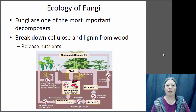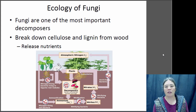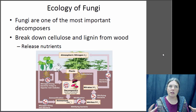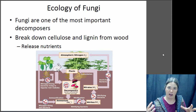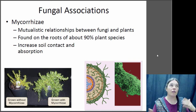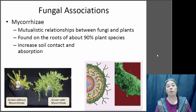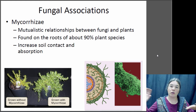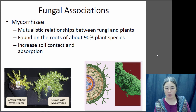Fungi are really important in ecology — they're one of the most important decomposers, breaking down organic material and making it available for other organisms. Cellulose and lignin from woody material wouldn't get broken down very well without fungi. They also have symbiotic relationships with plants, called mycorrhizae. They grow around the roots of the plant, are fed sugars by the plant, and in return increase the surface area of roots, allowing the plant to absorb more water and nutrients from the soil. Many plants don't grow well without their mycorrhizae.